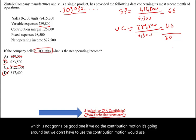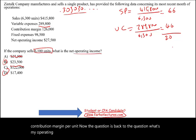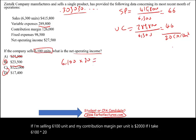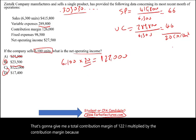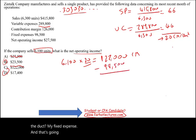We'll use the contribution margin per unit. The question is: what's my operating income? If I'm selling 6,100 units and my contribution margin per unit is $20, I take 6,100 times $20, which gives me a total contribution margin of $122,000. From the contribution margin I deduct my fixed expense of $98,500, and that gives me $23,500 net operating income.